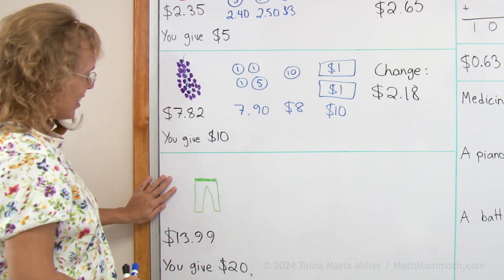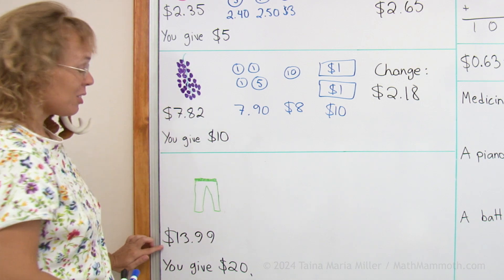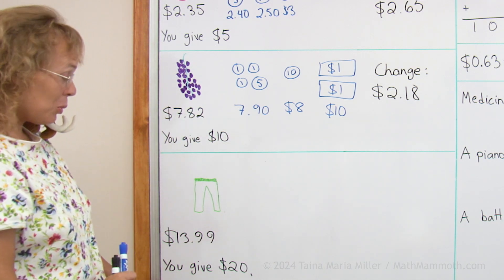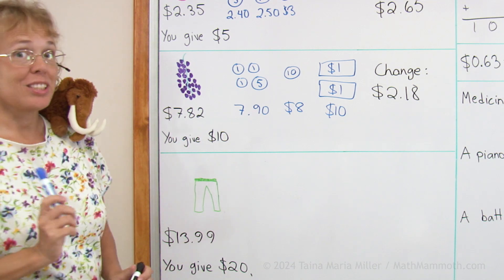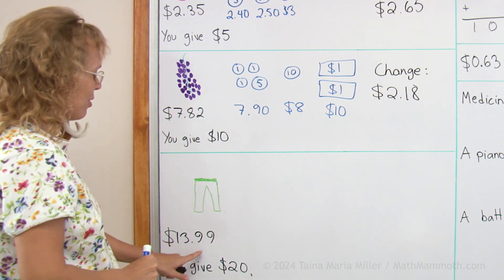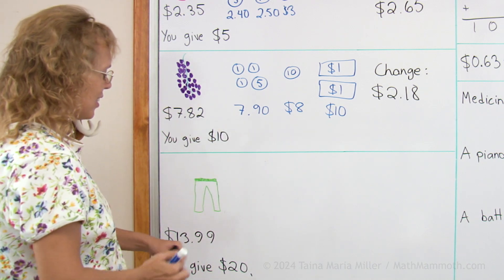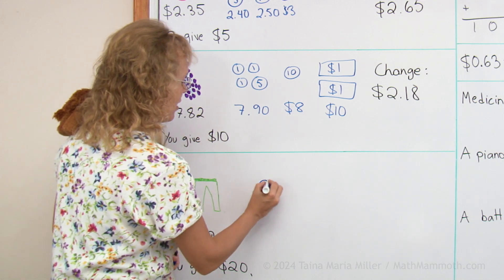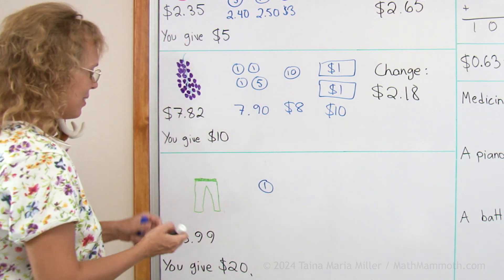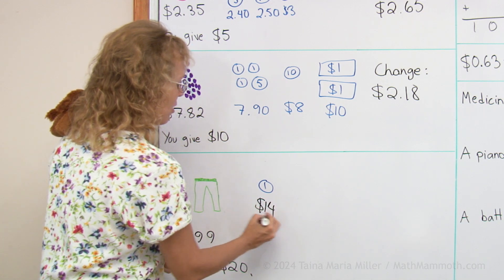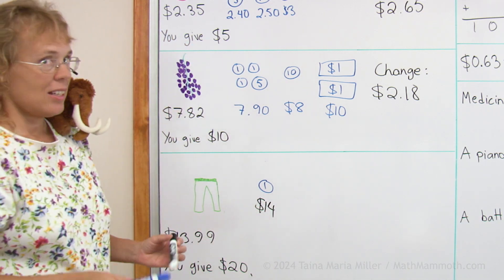One more time, there's some pants and they cost $13.99. You give $20.00. We'll do the same thing. We count up from this amount towards $20.00. So there's $13.99. First, I will just add 1 cent and then I am at $14.00.